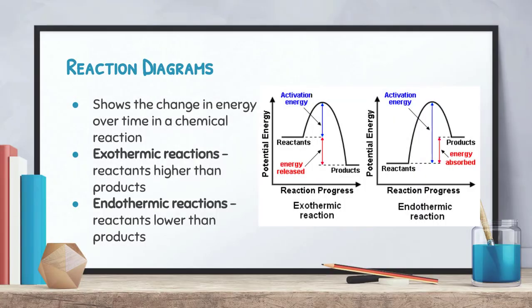Reaction diagrams are really important because they show the change in energy of a chemical reaction over time. For an exothermic reaction, the energy is higher in the reactants than in the products — that makes sense because exothermic reactions release energy, so the energy in the products is lower. For an endothermic reaction, it's the exact opposite: reactants have less energy than the products because the products absorb energy from the environment during the reaction. So in exothermic diagrams reactants are higher, and in endothermic diagrams reactants are lower.